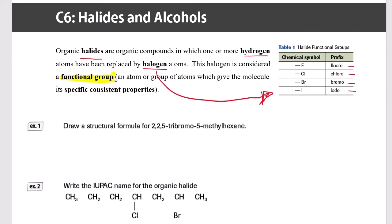The halogen is something that we call a functional group, and a functional group is an atom or a group of atoms that is going to give the molecule a set of specific consistent properties. These would include things like the types of reactions that a molecule is able to undergo, and we'll look at that in a little bit more detail in our next lesson on reactions. That'll be in C7.